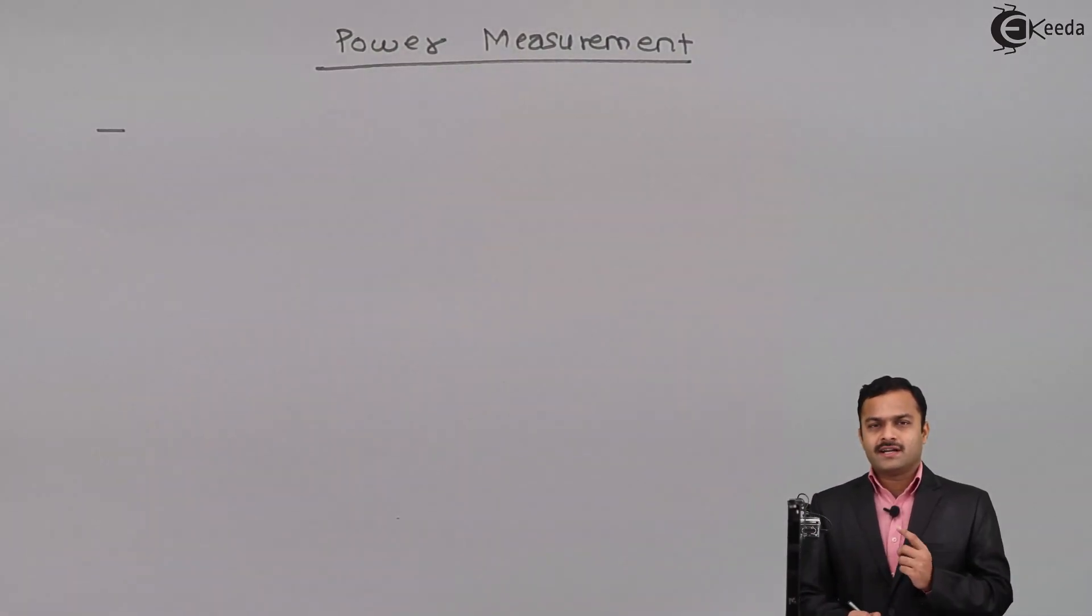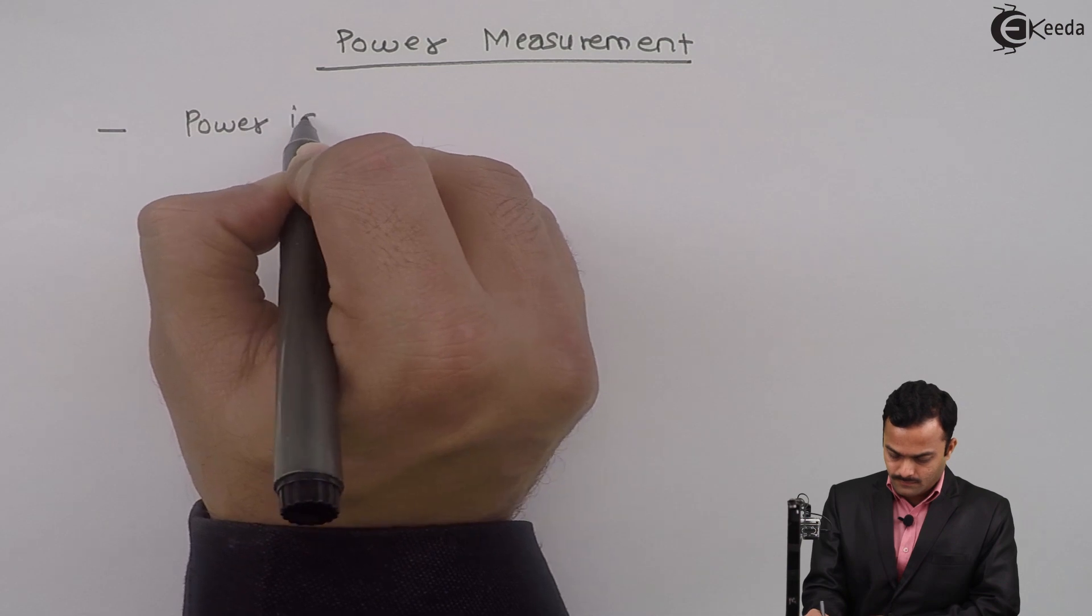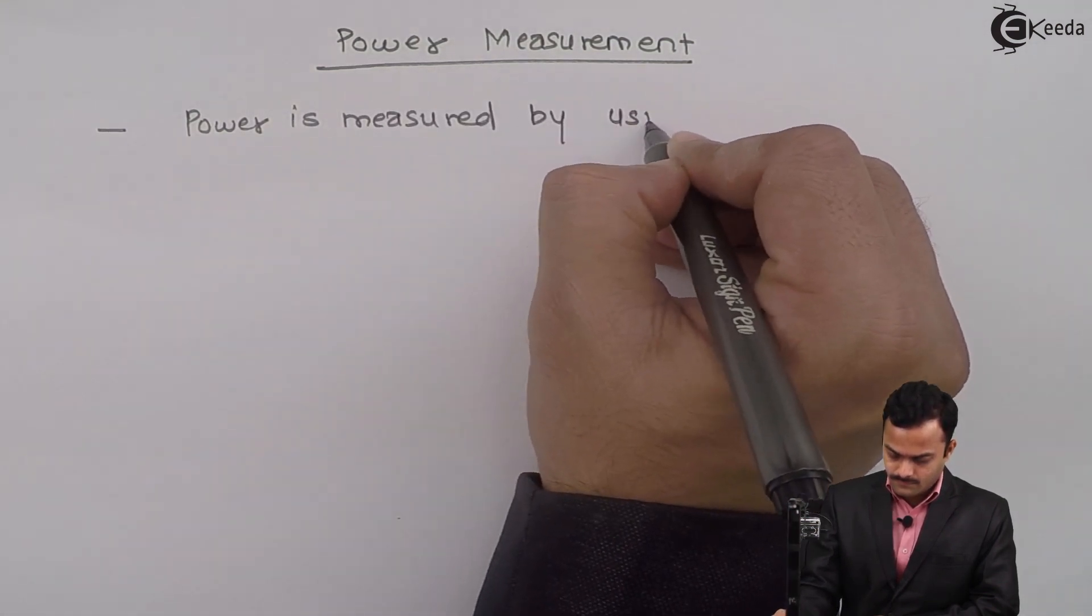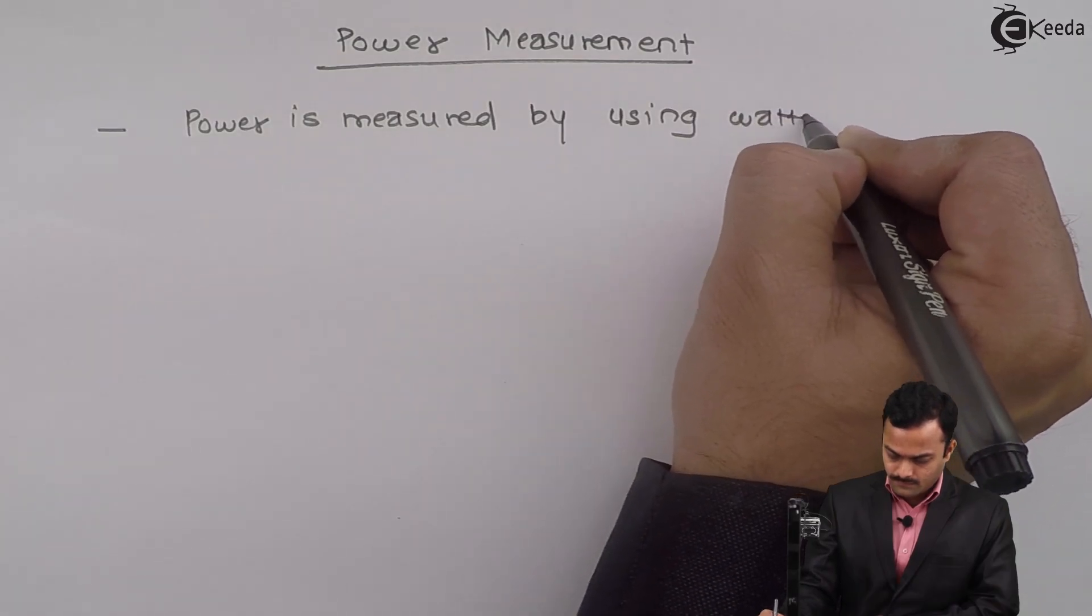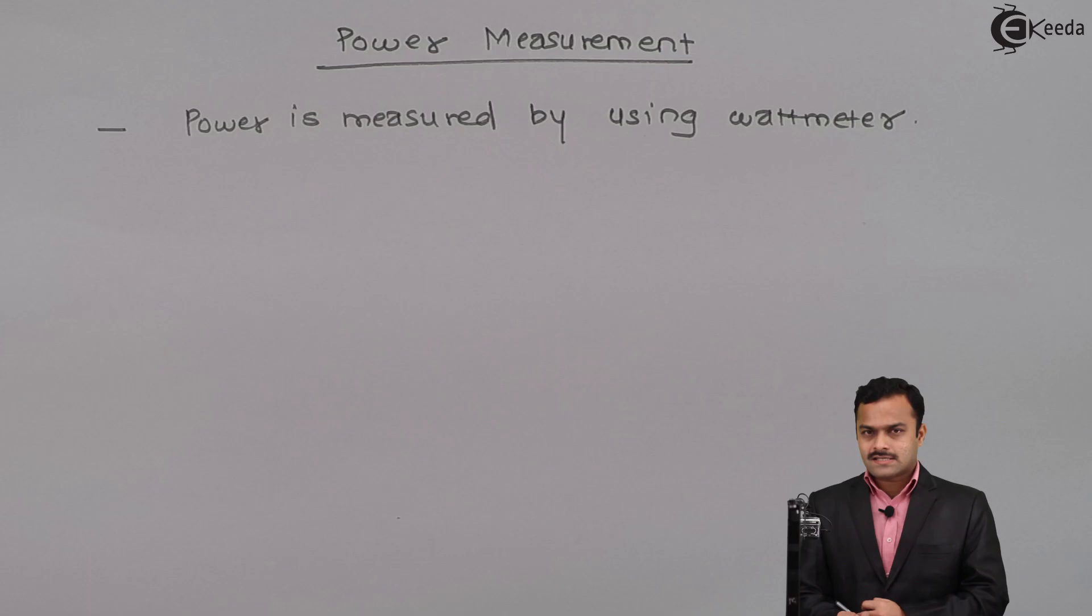Power is measured in AC circuits with the help of a wattmeter. So let's discuss how to measure power using the wattmeter. For that, I should know the wattmeter connections.